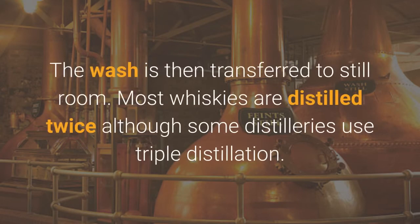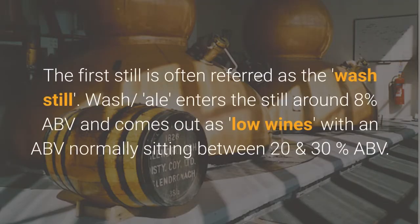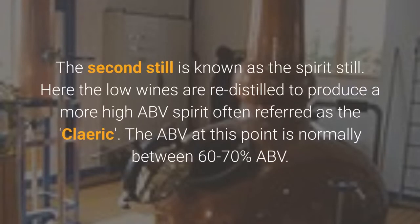The wash is then transferred to the still room. Most whiskies are distilled twice, although some distilleries use triple distillation. The first still is often referred to as the wash still. Wash ale enters the still at around 8% ABV and comes out as low wines, with an ABV normally sitting between 20 and 30%. The second still is known as the spirit still. Here the low wines are re-distilled to produce a higher ABV spirit, often referred to as the new make or 'clearic.' The ABV at this point is normally between 60 and 70% ABV.